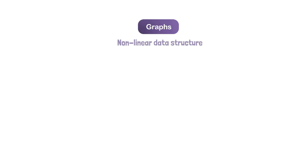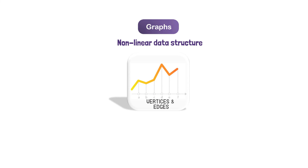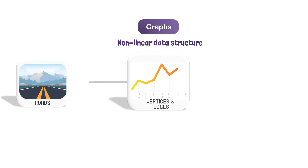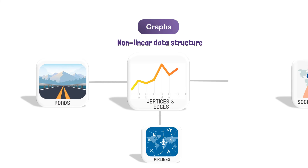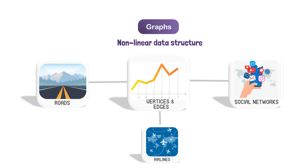Graphs. A graph is a non-linear data structure that is used to represent a collection of vertices and edges. Graphs are used to represent real-world relationships such as roads, airlines, or social networks. Here's an example of how you might implement a graph in a programming language like Python.